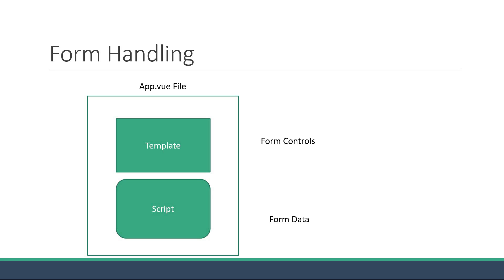When a user fills in the form data in the UI, we need a way to propagate that data into the script block. At the same time, if there is a change in the data, for example loading an already saved form data, we need a way to propagate that data back into the template block. We need our template and our data to always be in sync. Luckily for us, Vue provides another directive to handle this scenario — the v-model directive, which provides two-way binding. Two-way binding refers to binding from the template to the data and from the data back to the template. It basically ensures your model and your view are always in sync.